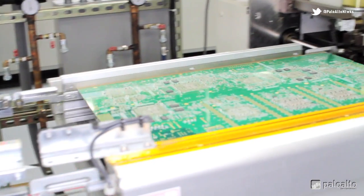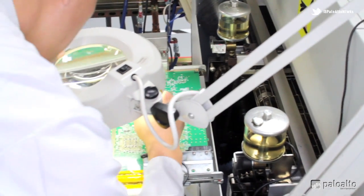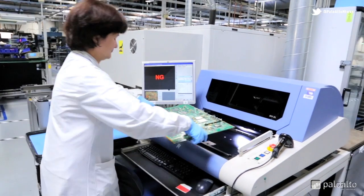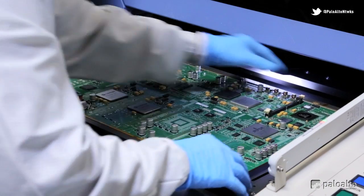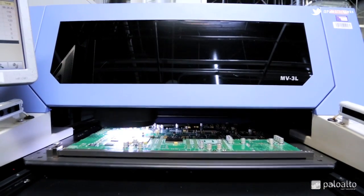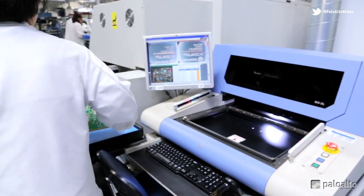Each time the board comes out of the reflow oven, it is visually inspected for quality control. The board is also subjected to an automatic optical inspection or AOI. Here, a computer checks for orientation of components, missing components, alignment, and part marking.